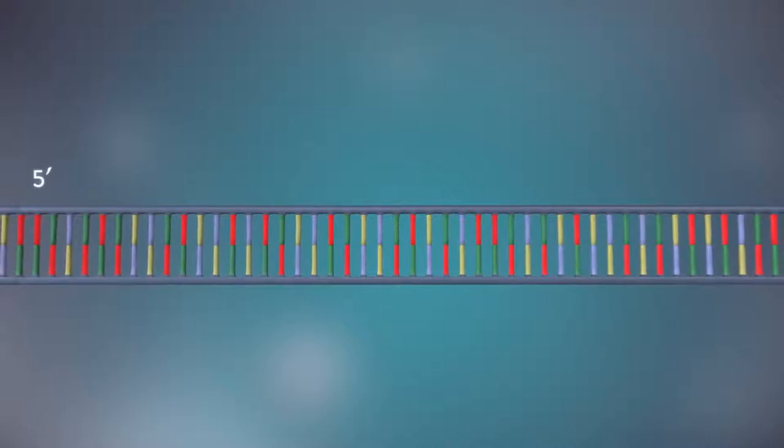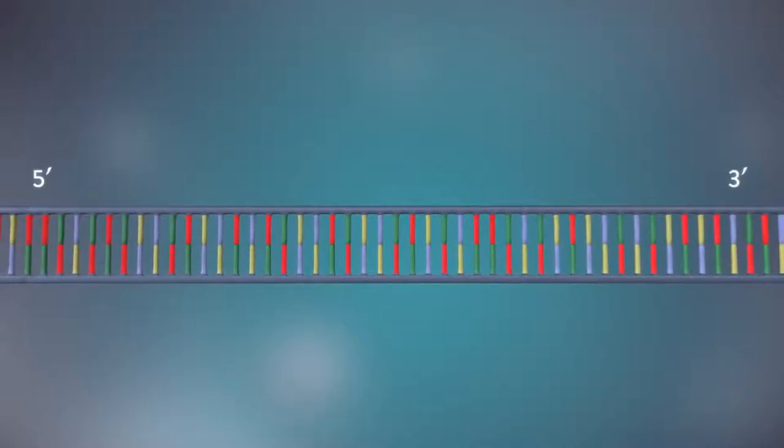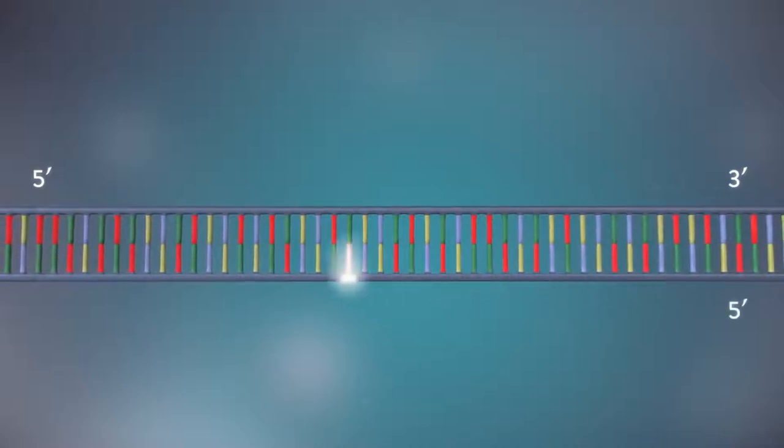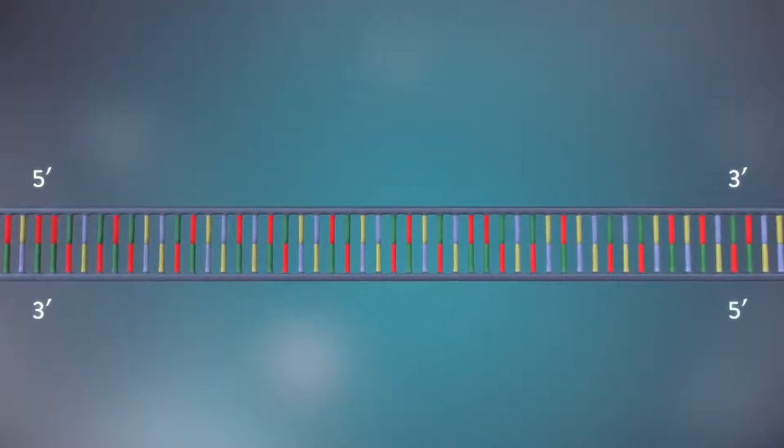Each strand has a five prime end and a three prime end. The two strands run in opposite directions. This determines how each strand of DNA is replicated.